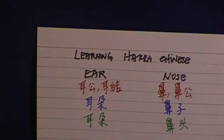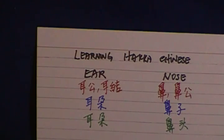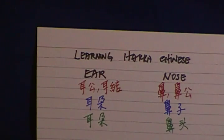Nose. Nose in Hakka Chinese is pi or pi kong. Pi or pi kong. In Mandarin is bi ze. And in Shanghai dialect is ba du.